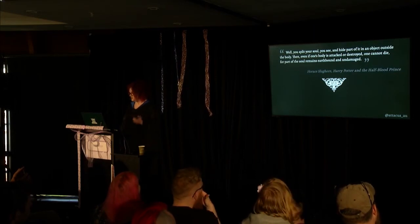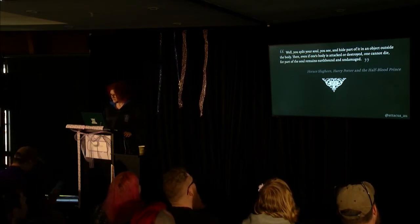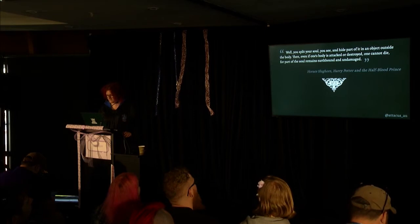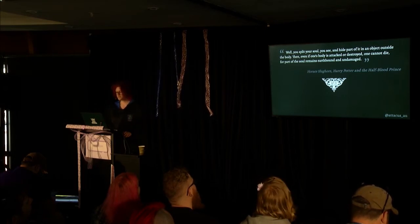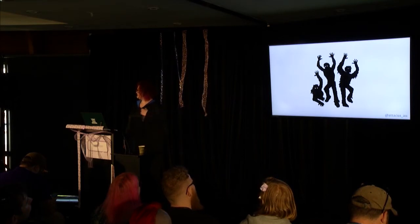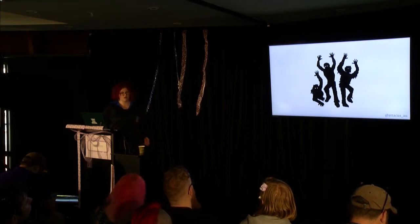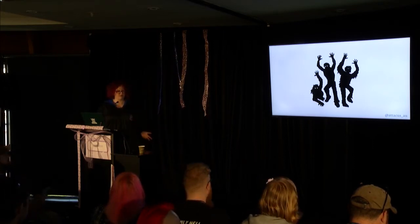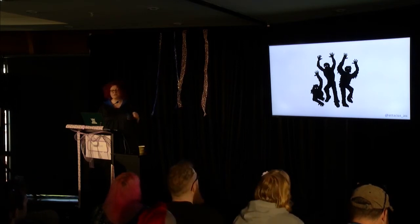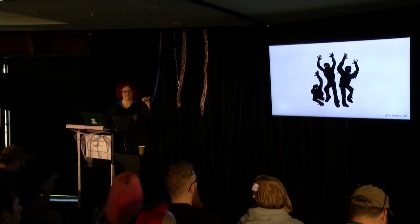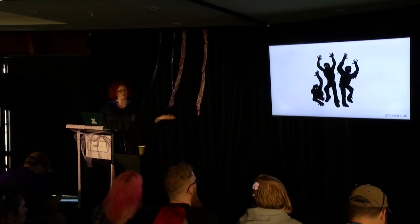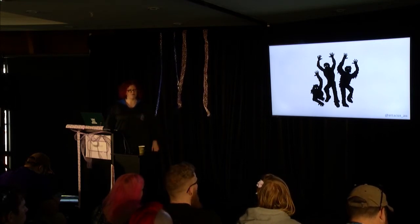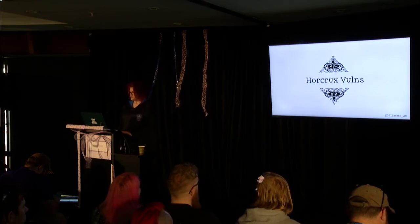As one Hogwarts professor describes horcruxes: 'You split your soul and hide part of it in an object outside the body. Then even if one's body is attacked or destroyed, one cannot die, for part of the soul remains earthbound and undamaged.' Voldemort decided to create seven horcruxes because if someone tried to murder him and knock one of his availability zones offline, he could fail over to any of the others while he resolved the incident. He also decided these horcruxes needed to be stored in geographically different places so it would be more difficult to take them all out at once.